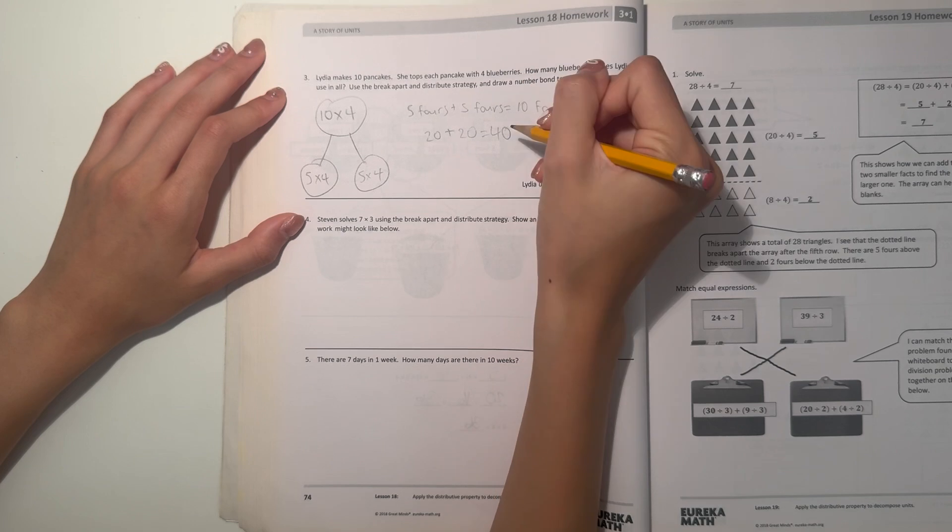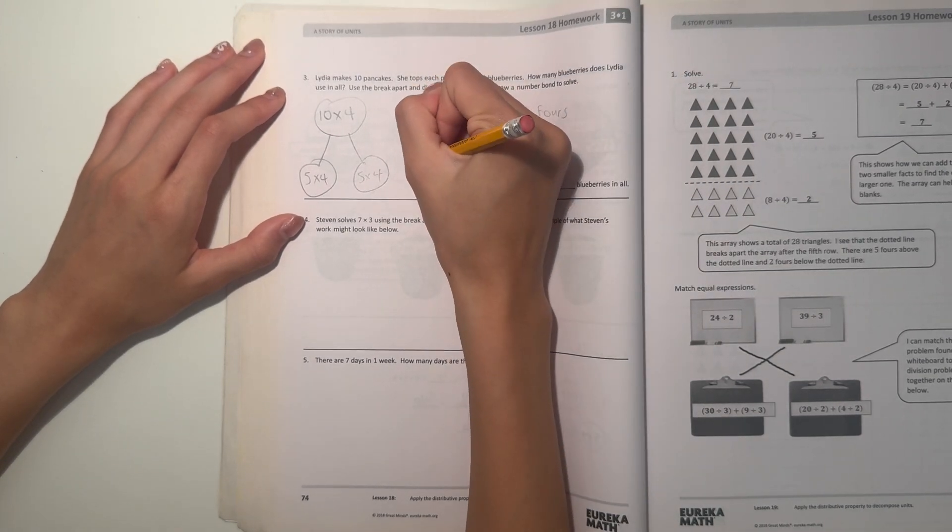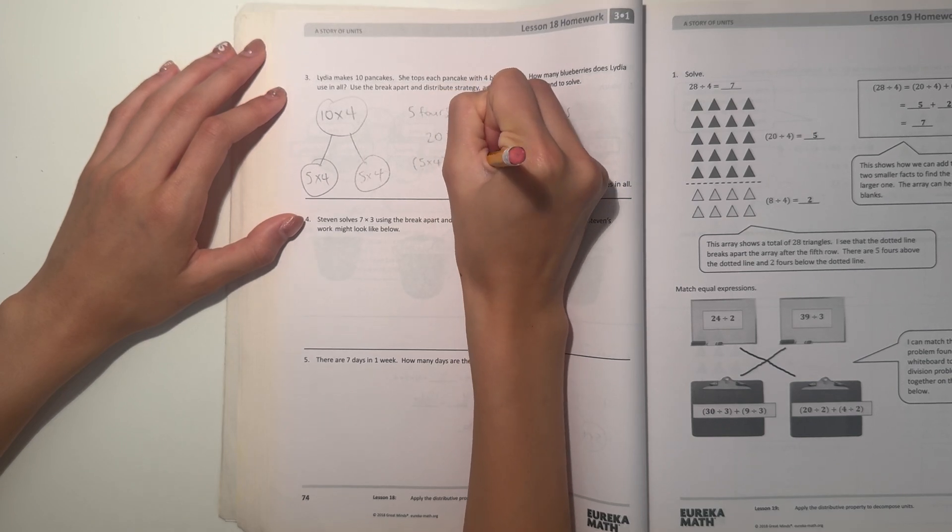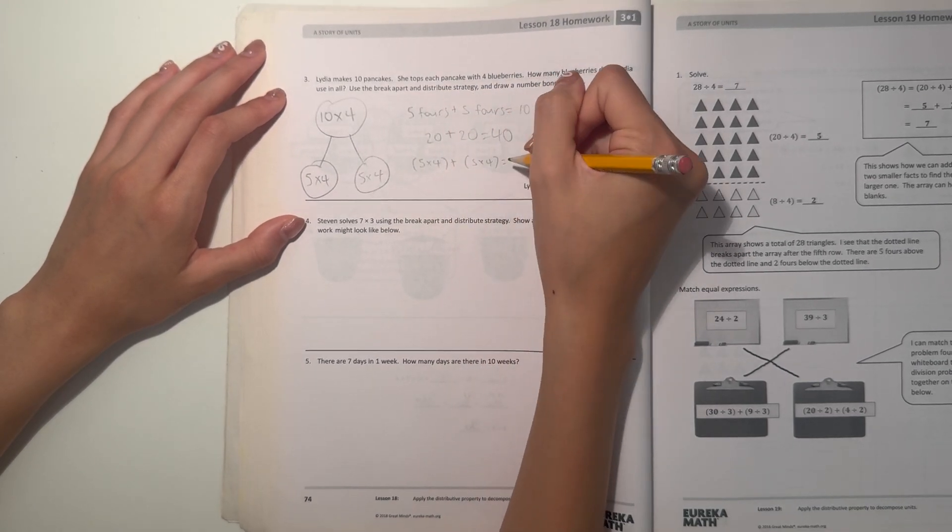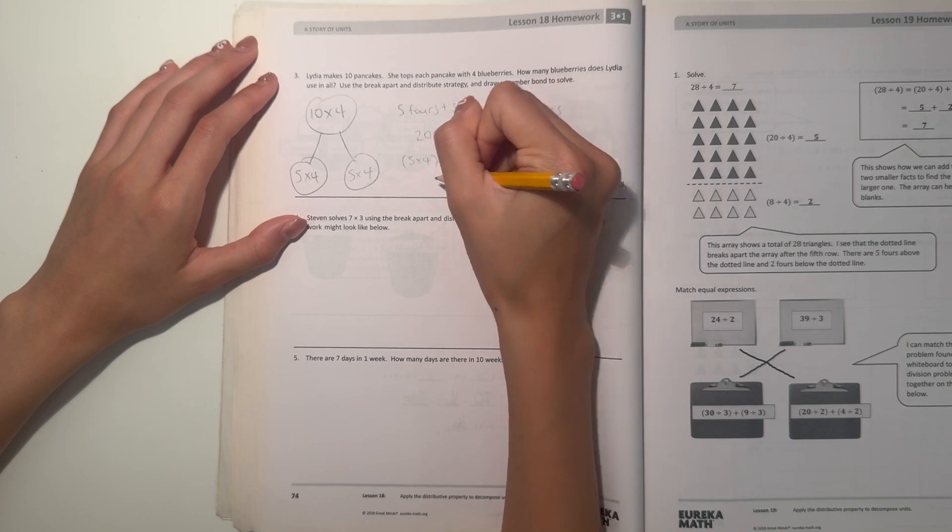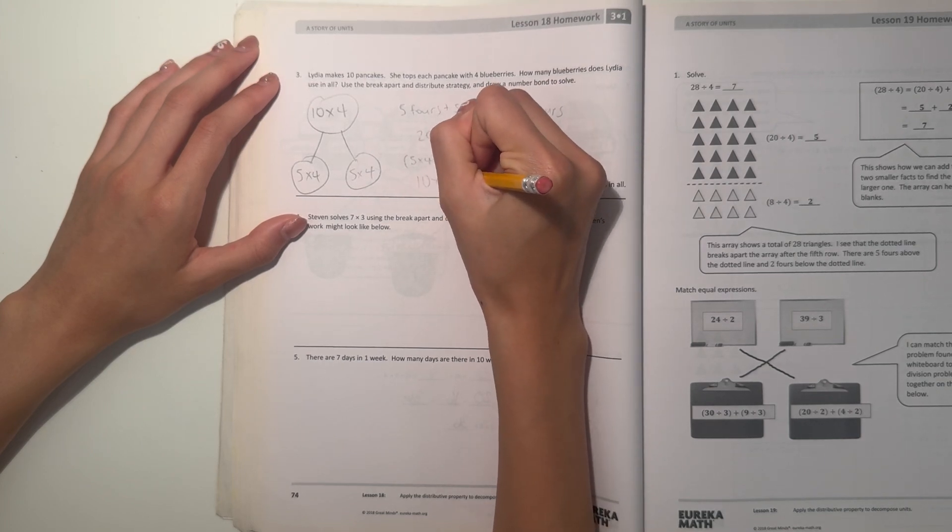That is ten fours, and we could also write that - we could do 10 times four, so that'd be 40. So that means 10 times four equals 40. So yeah, that could be what to write. So Lydia uses 40 blueberries in all.